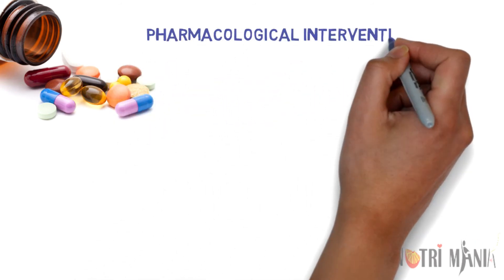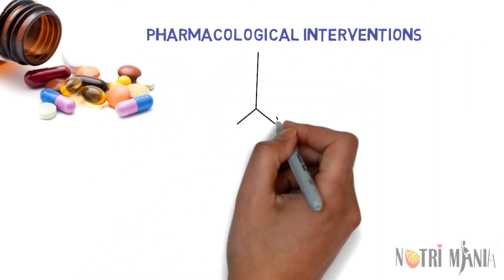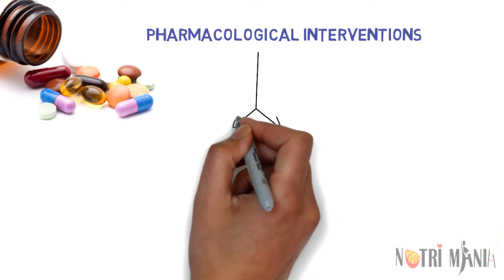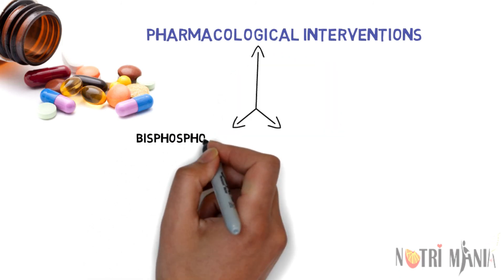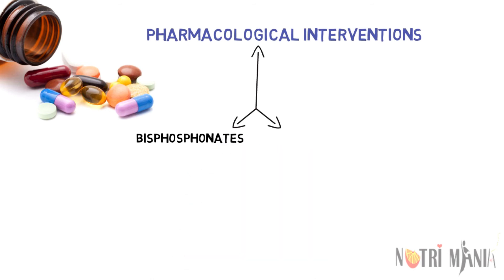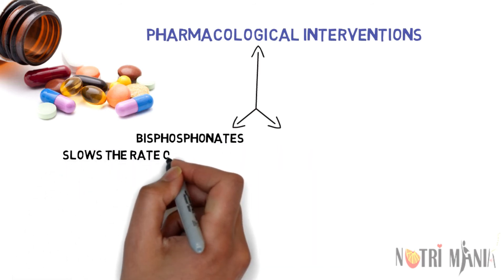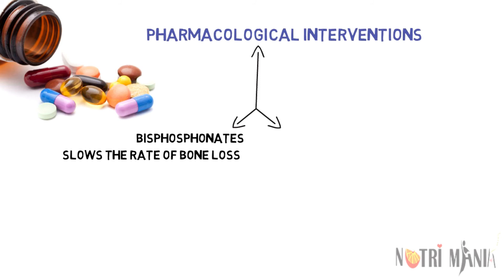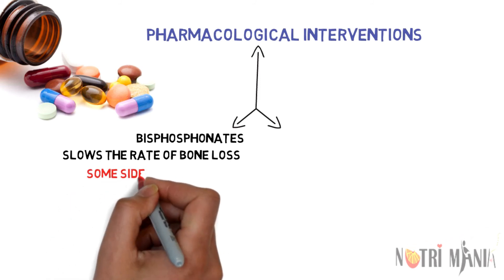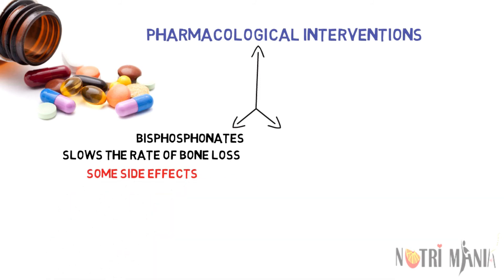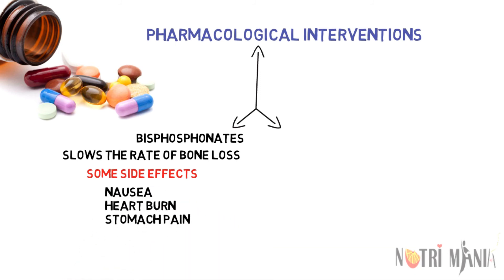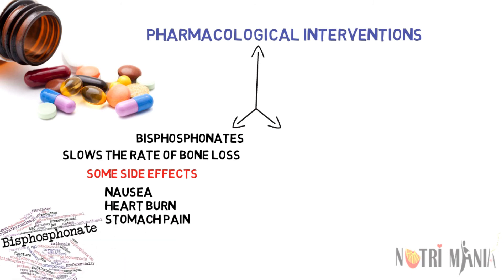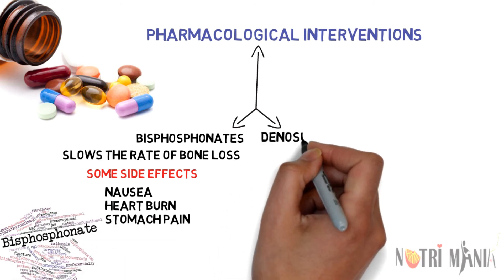Pharmacological interventions: bisphosphonates are the most commonly used class of medicines to treat osteoporosis. They work by slowing the rate of bone loss. Main bisphosphonates include alendronate, which can be taken once a day or once a week; ibandronate, only for postmenopausal women, as a once-a-month pill or given through an IV every three months. Some side effects of bisphosphonates are nausea, heartburn, and stomach pain.